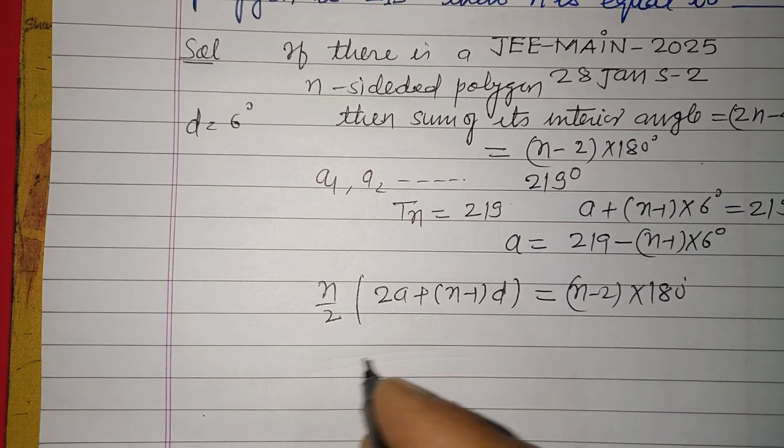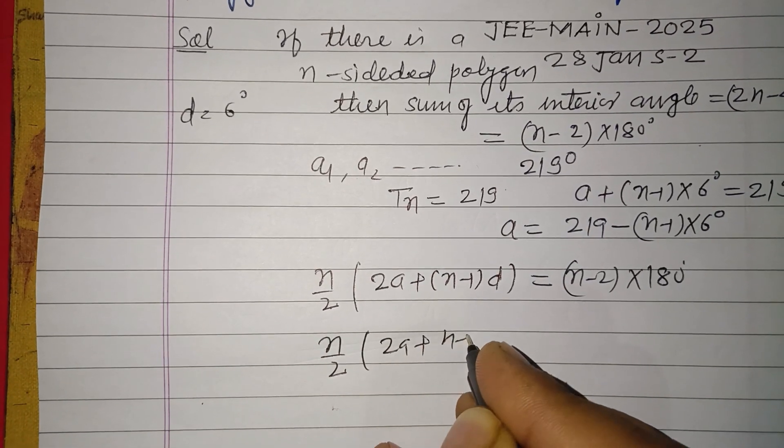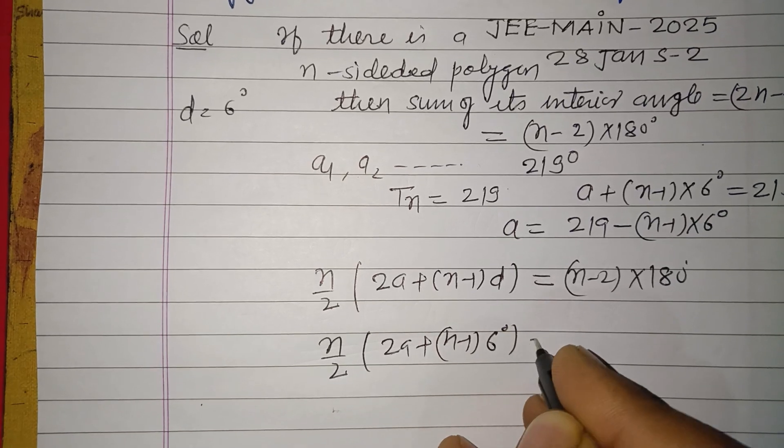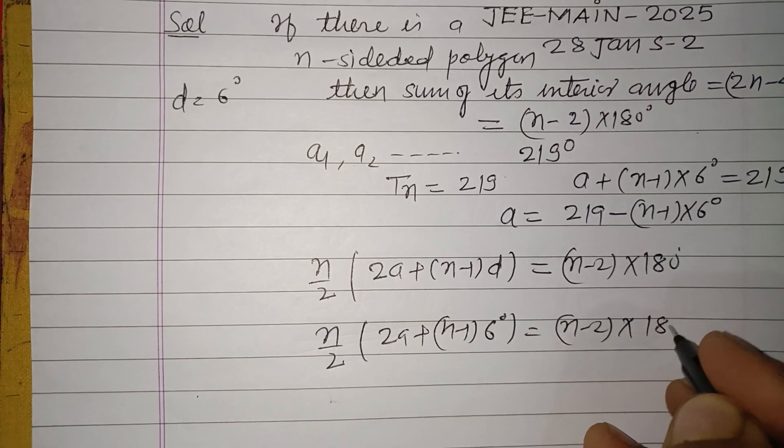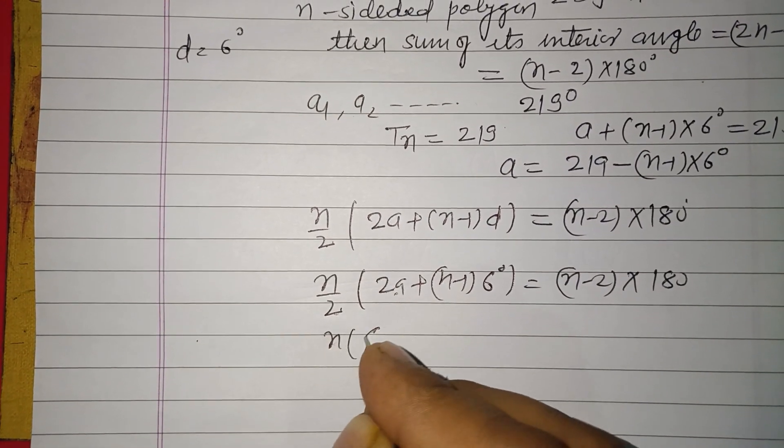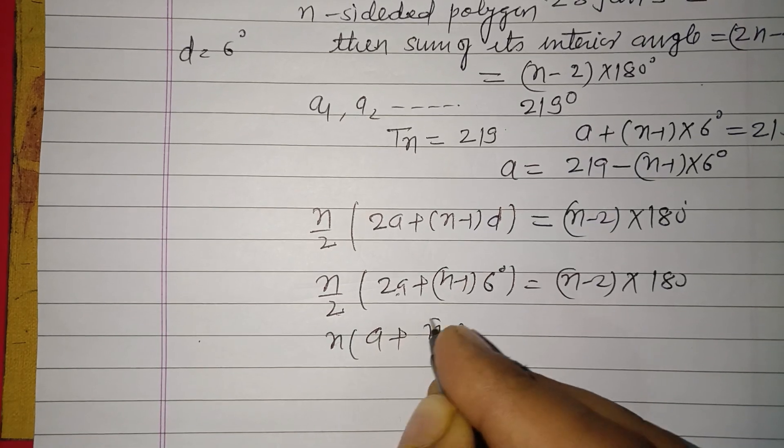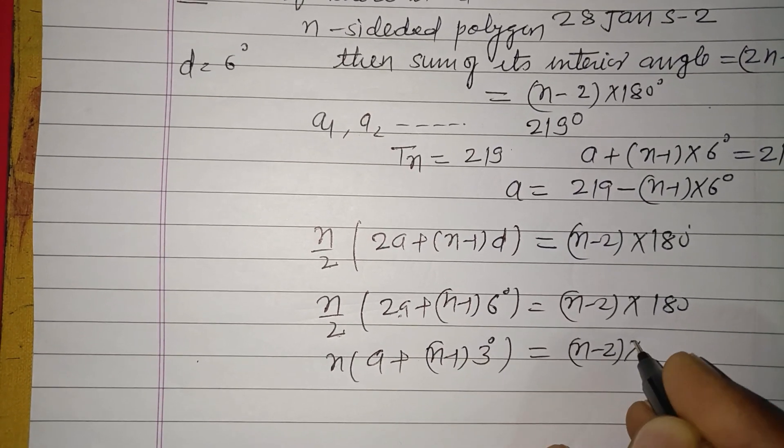Dividing by 2 and putting the value where d is 6, we get n into a plus n minus 1 into 3 equals n minus 2 into 180. Simplifying, that's n into a plus n minus 1 into 3 equals n minus 2 into 180.